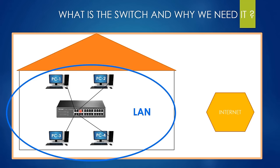To summarize, we have connected these four computers to each other thanks to the switch, which means we have created a local area network. These computers can easily communicate with each other since they're on the same LAN. But there is a little issue — our computers were in the same network, and we have only talked about communication between those devices. We have never talked about how these computers can connect to the internet.